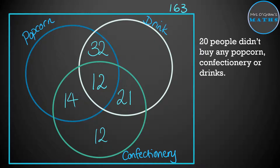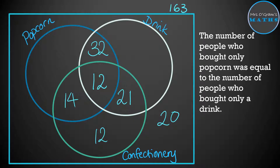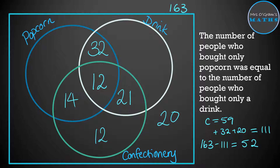20 people didn't buy any popcorn, confectionery, or drink — they just saw the movie with a ticket — so that 20 goes on the outside of all the circles. The number of people who bought only popcorn was equal to the number who bought only a drink. Adding the confectionery total, the 32, and the 20 gives us 111 accounted for, leaving 52 out of 163. Split equally, that gives 26 for only popcorn and 26 for only drink.